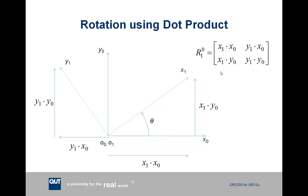If you're familiar with matrices or dot products, you may have observed that this rotation matrix is simply the dot product of all these components. For instance, the component of the x1 axis in the x0 direction is simply the dot product of x1 and x0, and this is the same for all other elements. We know dot products are worked out using the cosines and sines we've seen before.